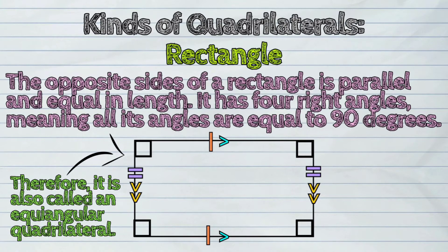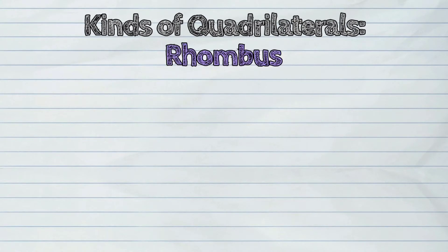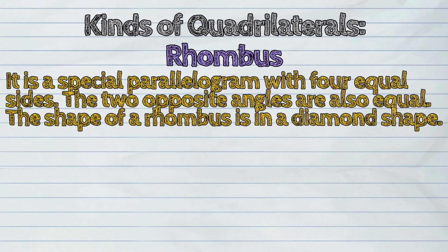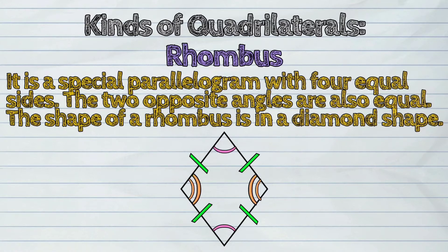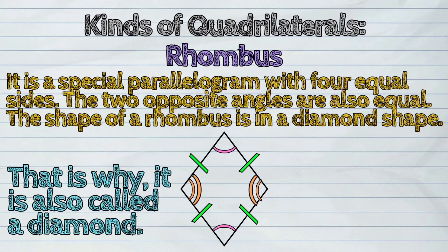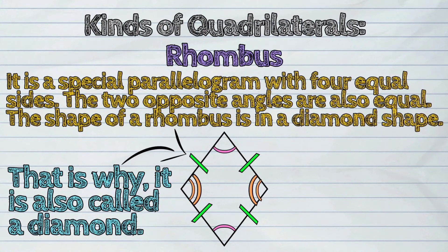Third, a rhombus. It is a special parallelogram with four equal sides. The two opposite angles are also equal. The shape of a rhombus is a diamond shape, which is why it is also called a diamond.